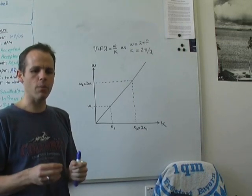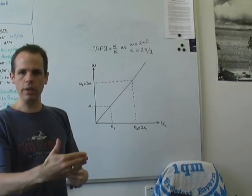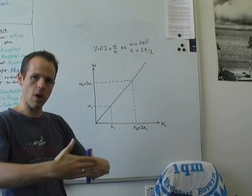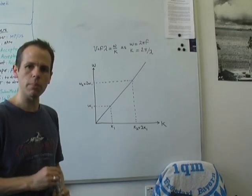And how you end up with dispersion, which is one set of frequencies travelling at a different speed to another, and so they kind of disperse in space or time as they move through some particular medium.